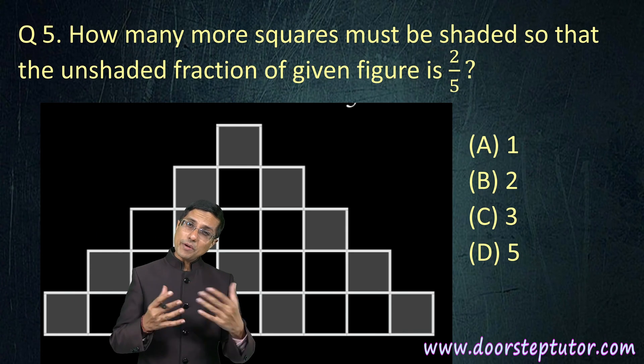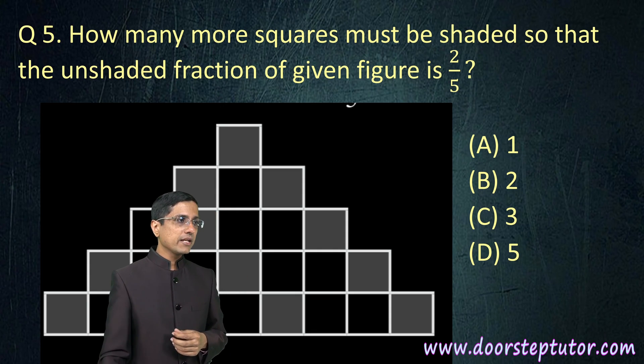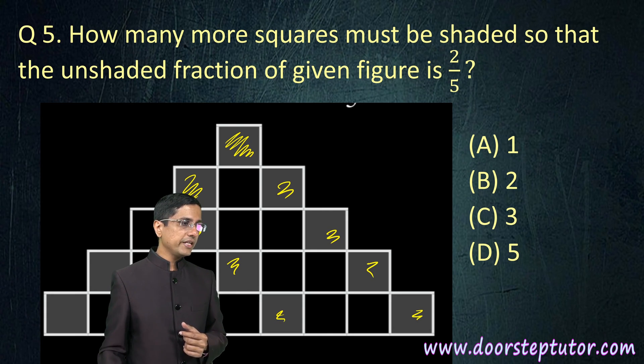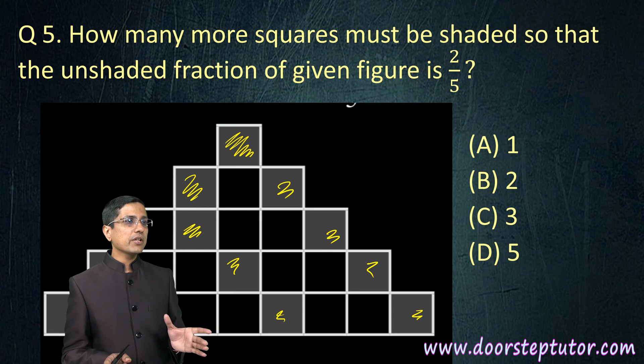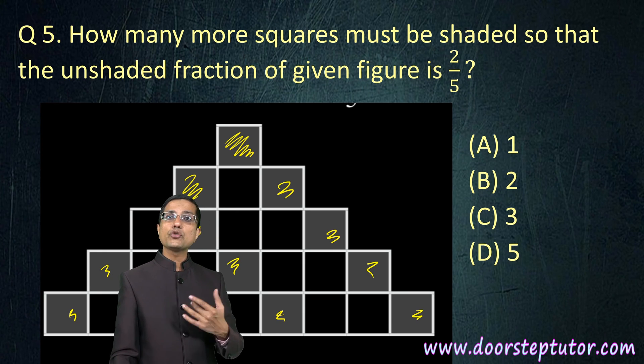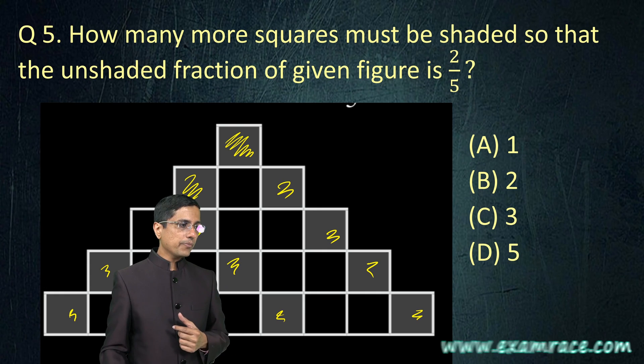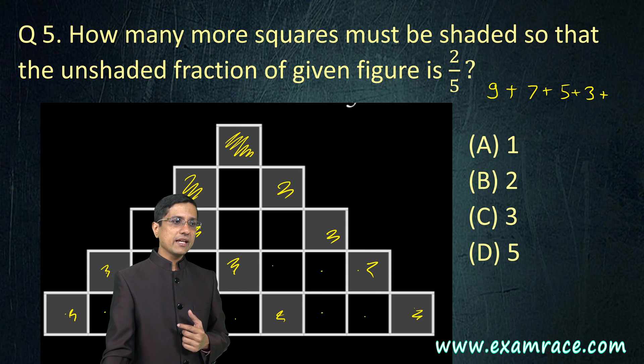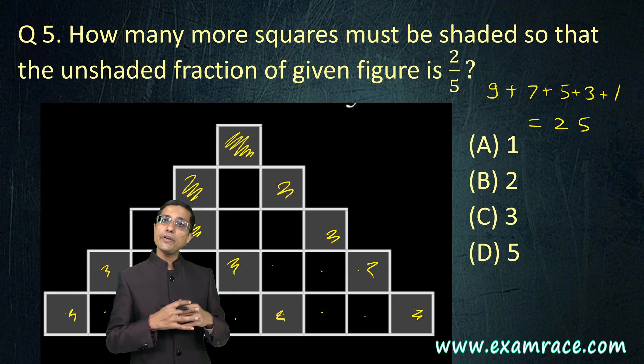Here, we are given a figure. It's a geometric kind of question, but really an aptitude question. We have been asked that this gray colored region is the shaded region. I will shade it once more so that it becomes clear which squares are shaded. And we have been asked that how many more squares must be shaded so that the unshaded fraction of the given figure is 2 by 5. What are the total number of squares? If I compute that it is 1, 2, 3, 4, 5, 6, 7, 8, 9. So, this becomes 9 plus on top there are 7, and then on top of it there are 5, then 3 and then finally 1. So, if you total this, this is 25. There are total of 25 squares.